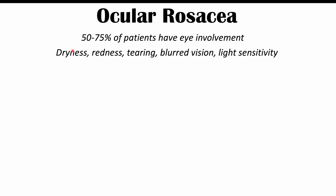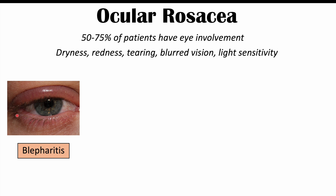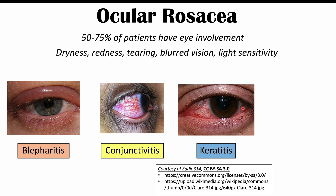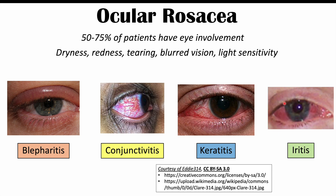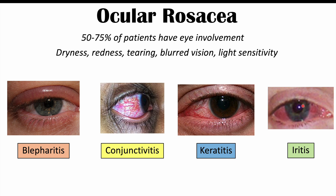Eye findings in rosacea include dryness, redness, tearing, blurred vision, and light sensitivity. We can also see blepharitis — an inflammation of the eyelids — and conjunctivitis, an inflammation of the conjunctiva, where you can see little red blood vessels. We can also see keratitis and iritis, which is an inflammation of the iris — the structure that surrounds the pupil and helps control its contraction and dilation.